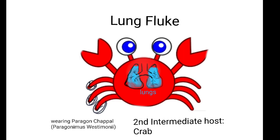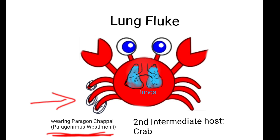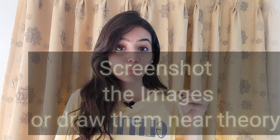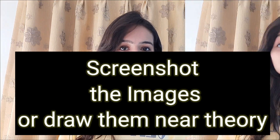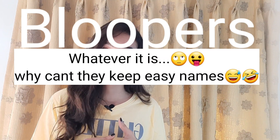The third one is lung fluke, also known as Paragonimus westermani. The second intermediate host is crab. You can imagine a crab wearing a 'Paragon chappal' as a mnemonic. The site of disease is the lungs. These images will be imprinted in your brain and will help you easily crack MCQs on metacercariae.